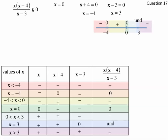We're looking for when the whole rational expression is less than or equal to 0 — so negative or 0. It's negative when x is less than negative 4, and it's 0 when x equals negative 4. So from negative infinity up to negative 4, inclusive. Then it's 0 at x equals 0, and negative between 0 and 3. But at x equals 3 it's undefined, so 3 is not included. So from 0 included up to 3 not included. The answer is negative infinity to negative 4 inclusive, union 0 inclusive to 3 not included.